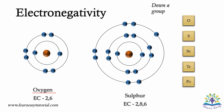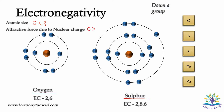Consider the example of oxygen and sulfur. The atomic size of oxygen is less than that of sulfur, and therefore the valence electrons experience a greater force of attraction compared to that of sulfur. Electrons in the vicinity of oxygen will experience a greater force of attraction than electrons in the vicinity of sulfur. So we can say that oxygen has a greater tendency to attract electrons compared to that of sulfur. Hence, down a group, the electronegativity decreases.